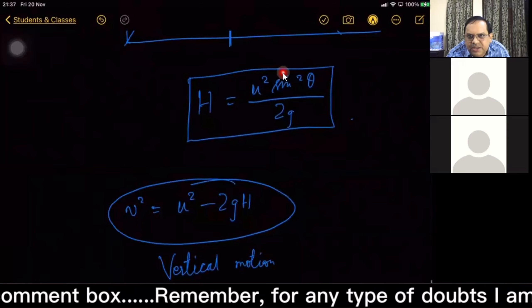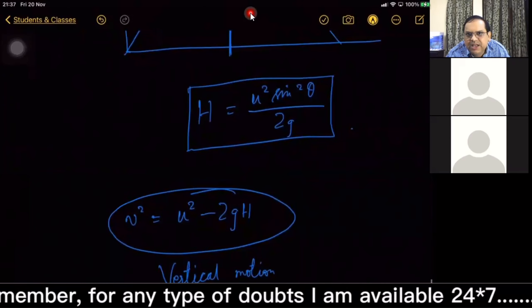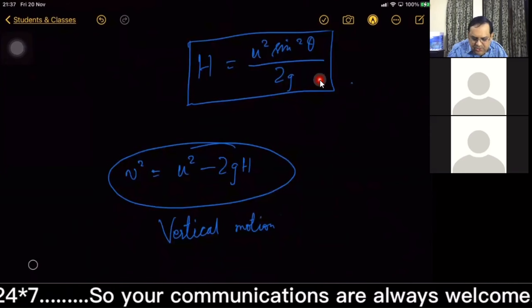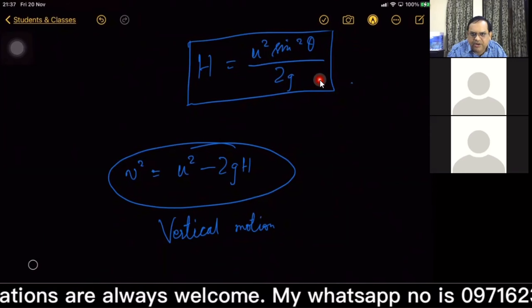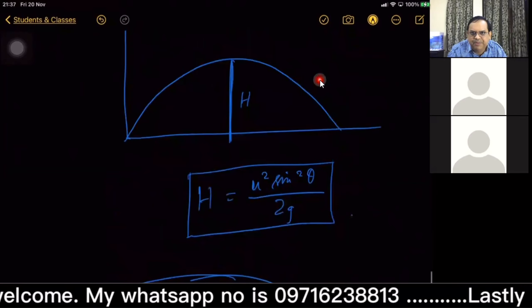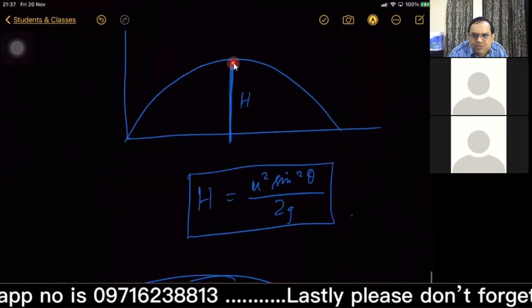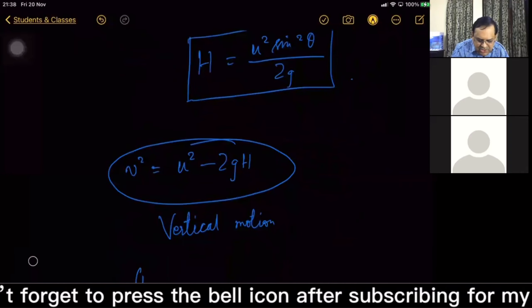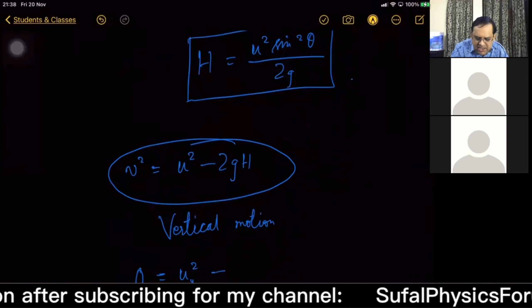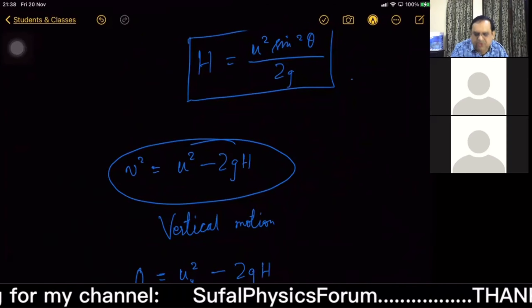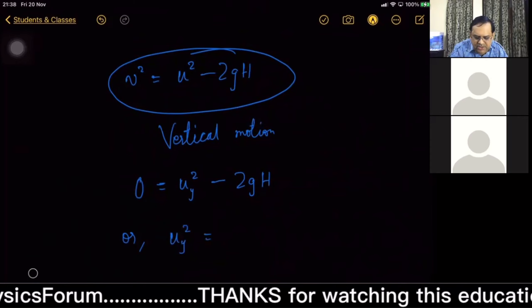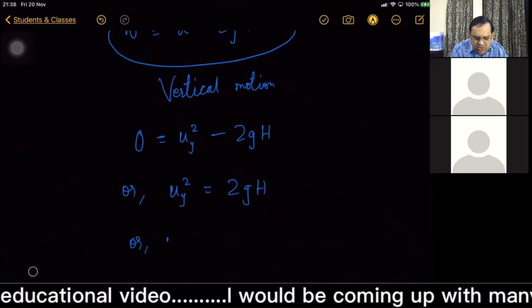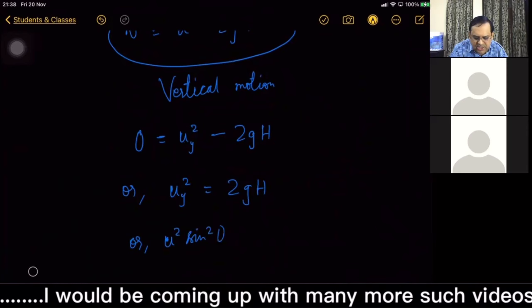This will get disconnected, you rejoin. Okay, so vertical motion. At maximum height, at this point again v_y will be zero. So v_y will be zero, v_y² = u_y² - 2gh. Only v_y² = 2gh, and v_y is u sin θ, or u² sin² θ.